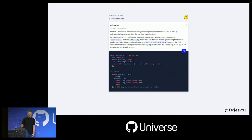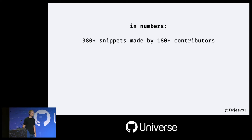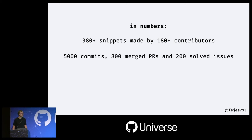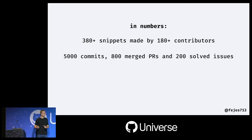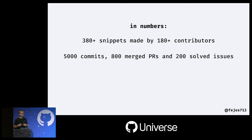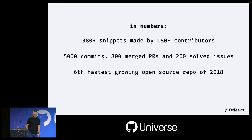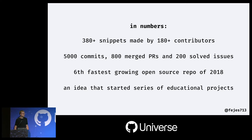When I say 'we', I mean the community — this is not a project I started originally. In numbers, there are more than 380 snippets made by nearly 200 contributors who together made over 5,000 commits, merged more than 800 pull requests, and resolved nearly 200 issues. We managed to be the sixth fastest growing open source repository of 2018. Most importantly, this idea started a series of other educational projects I'll talk about in a moment.